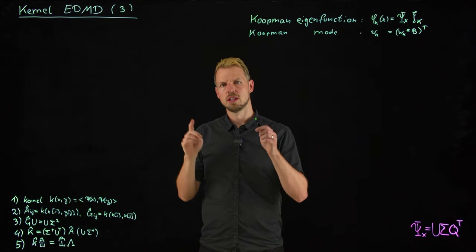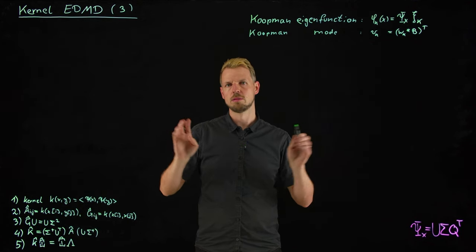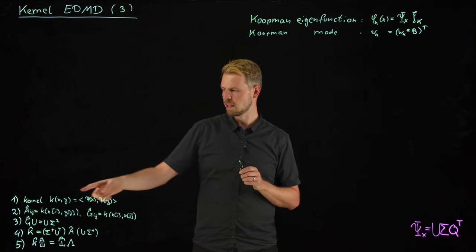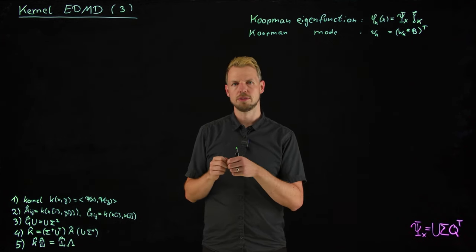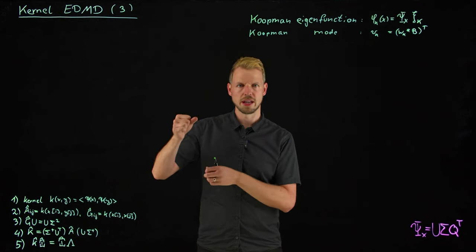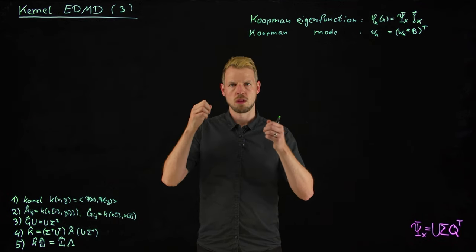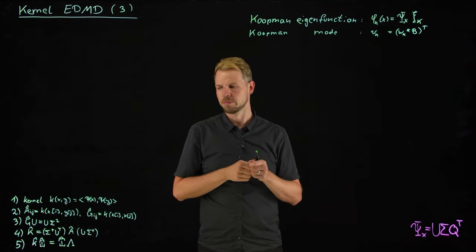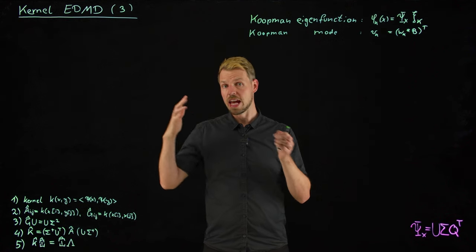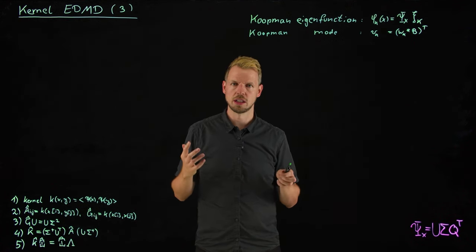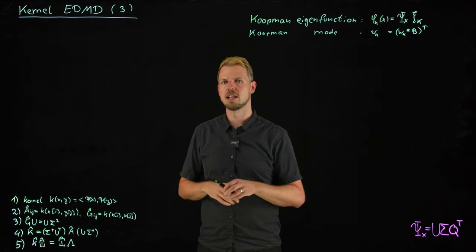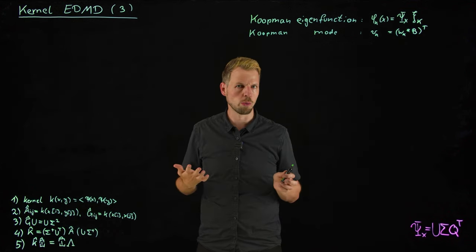And for the m, the large data problem, we had a solution that we computed these A and G matrices which were made up of inner products between these feature matrices, psi x times psi x and psi x times psi y. However, this gives us n by n matrices in the dimension of the features and we learned that this is particularly challenging if we have high dimensional state spaces and then lift this to monomials.